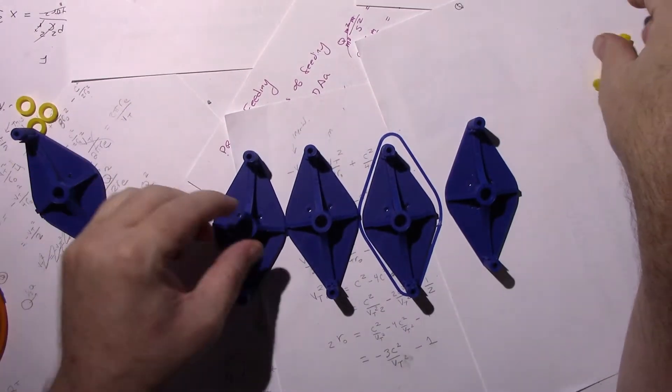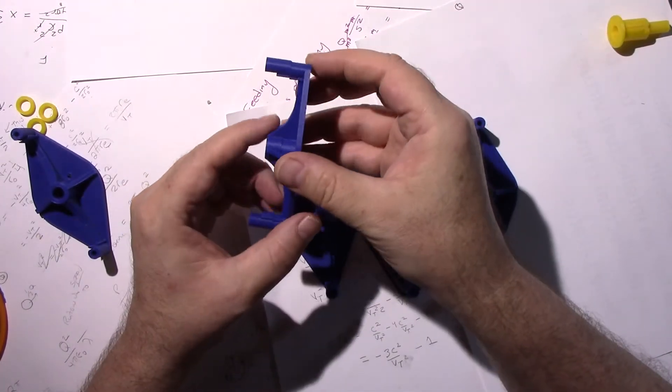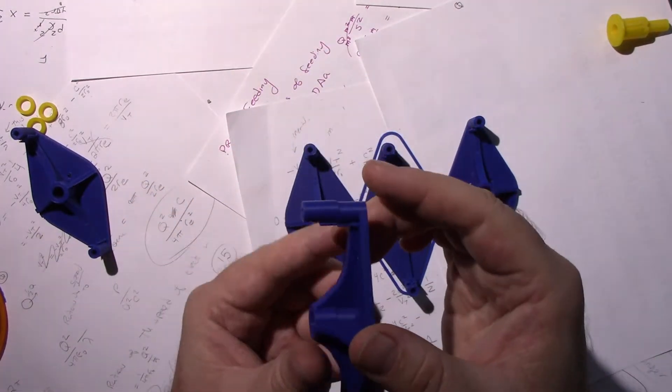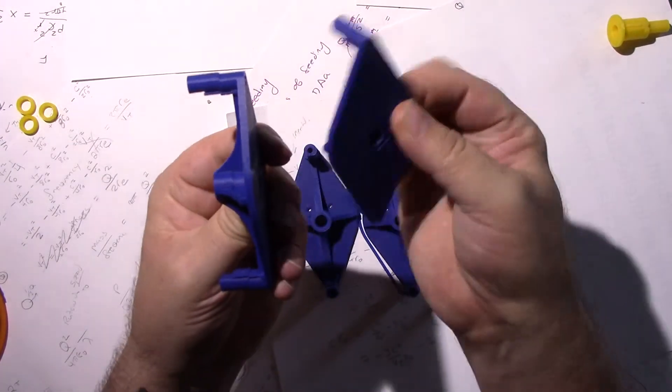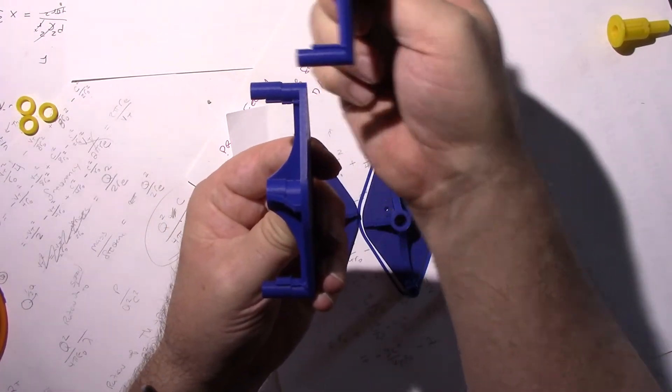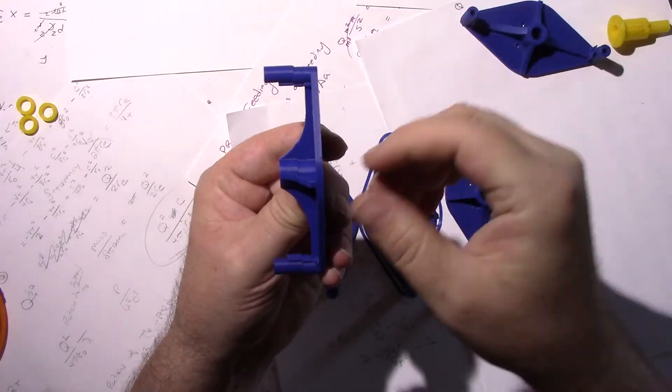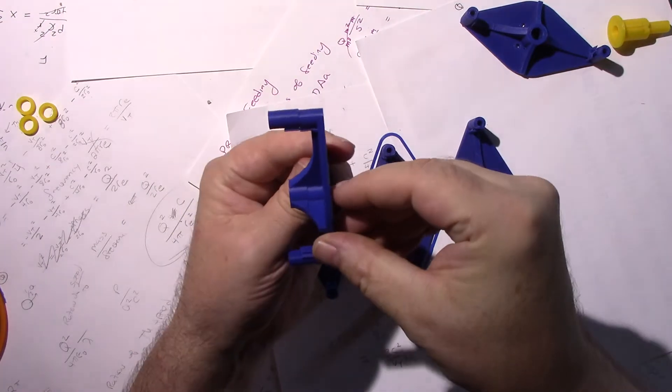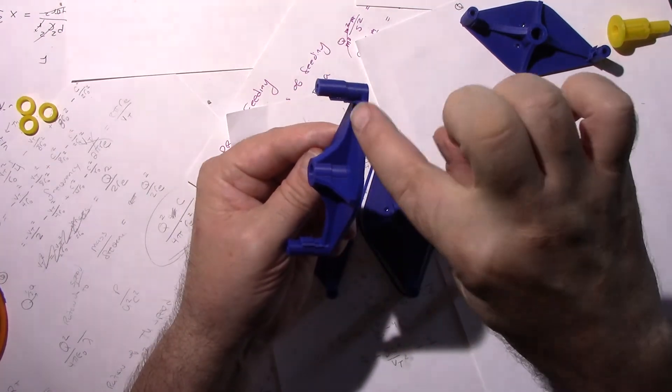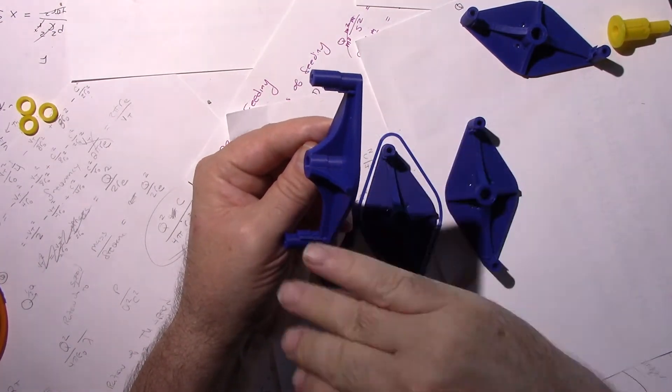And unfortunately what happened was, when I reprinted it again, if I pull it up to the camera, you can see that this post here, which should be straight, has like a little shift in it. The 3D printer lost alignment and every row above here, including this guy, is shifted off.